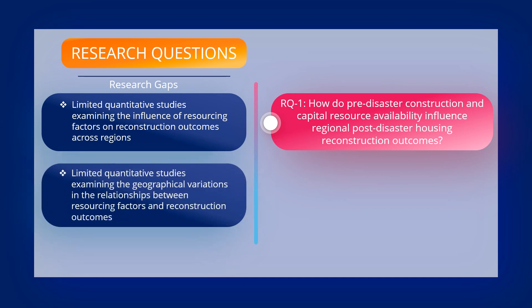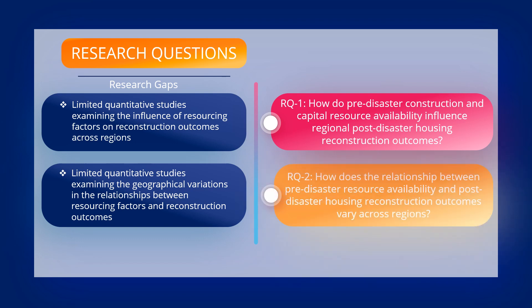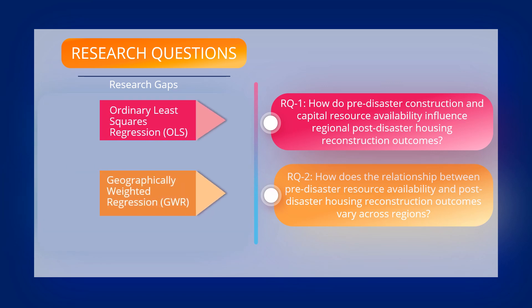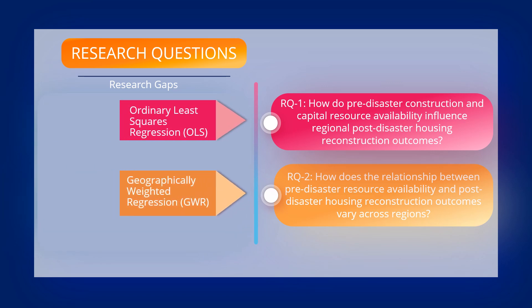The role of geography has been largely ignored in existing literature. Since the driving resourcing forces such as construction capacity and socioeconomic characteristics vary geographically across the U.S., we intend to figure out how the relationship between pre-disaster resource availability and post-disaster housing reconstruction outcomes varies across regions. We answer the first research question using ordinary least squares regression and the second research question using geographically weighted regression.